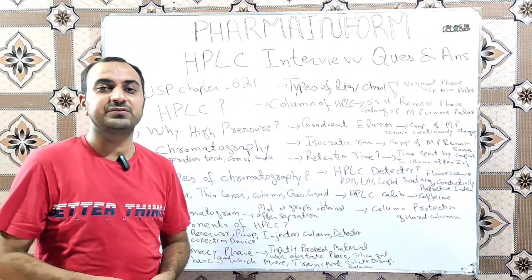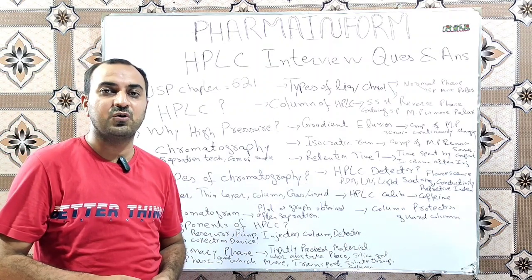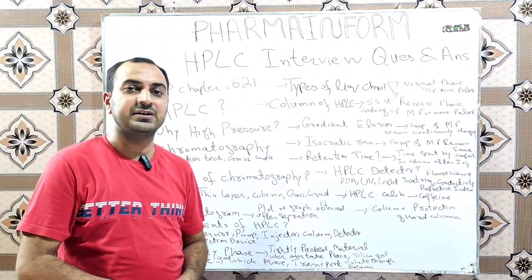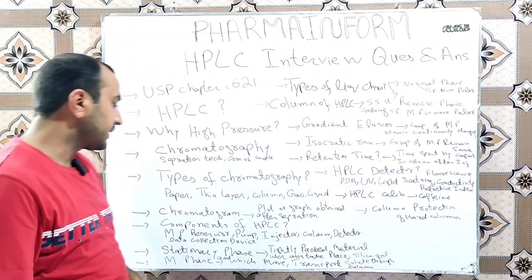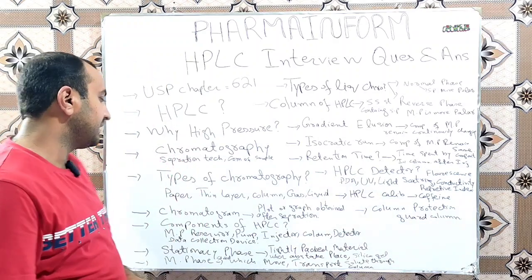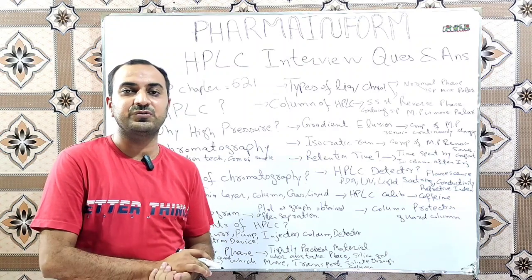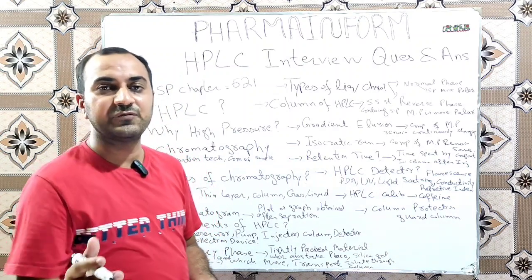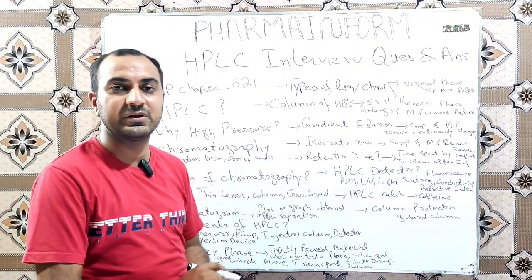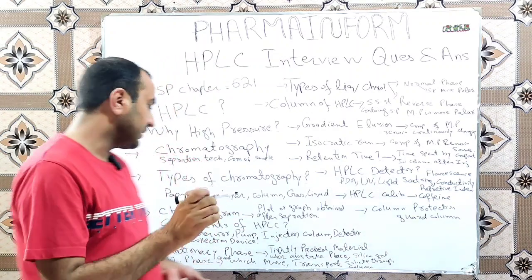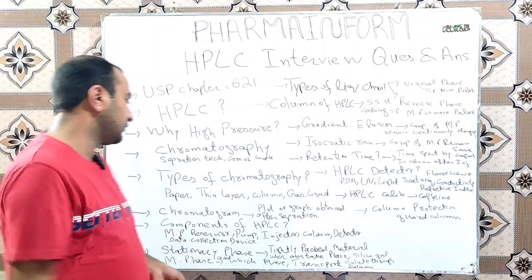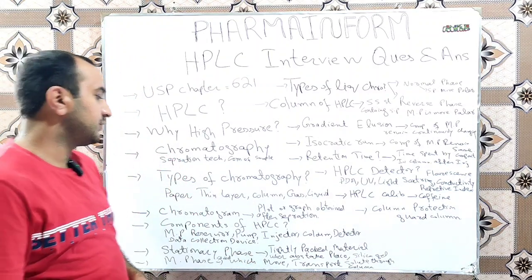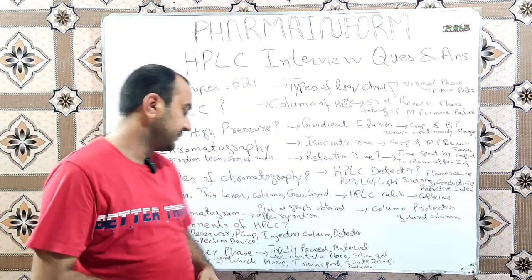The next question is: what is the stationary phase of HPLC? The stationary phase of HPLC is a tightly packed material where absorption takes place, and it is known as stationary because it does not move. The mobile phase, as the name indicates, is the phase which moves — it is a solvent that moves and transports the solute through the column.